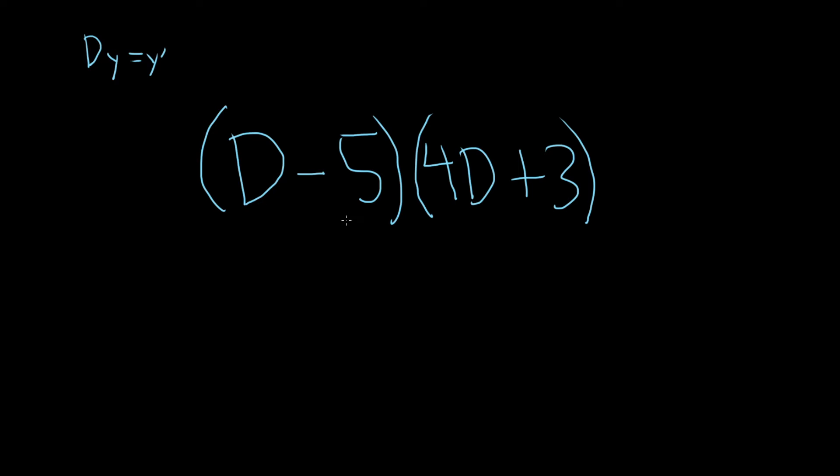Now there's no variables here, so this one's a little bit easier to do. So basically what you do is you just distribute like you normally do. So you take big D and you apply it to both of these.